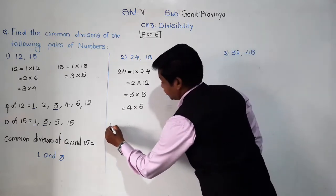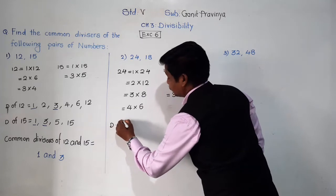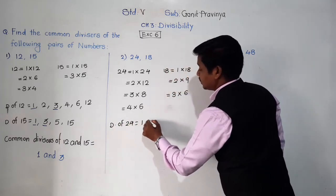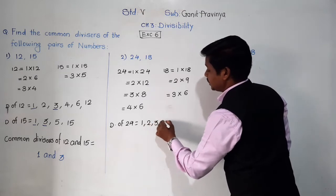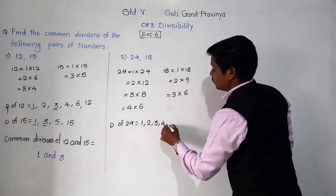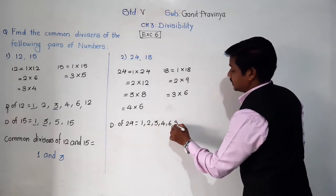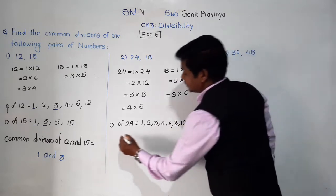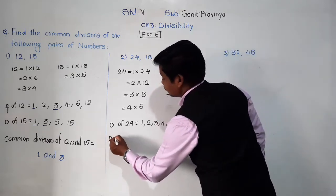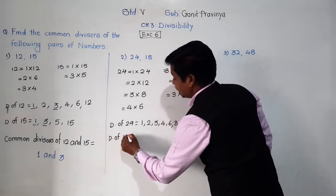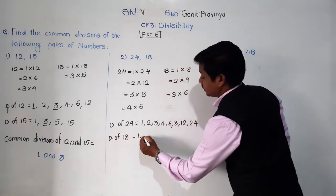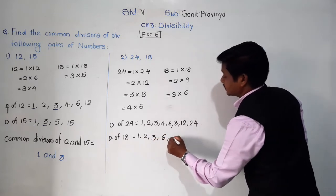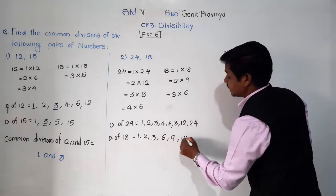So divisors of 24 are 1, 2, 3, 4, 6, 8, 12, and 24. Whereas divisors of 18 are 1, 2, 3, 6, 9, and 18.